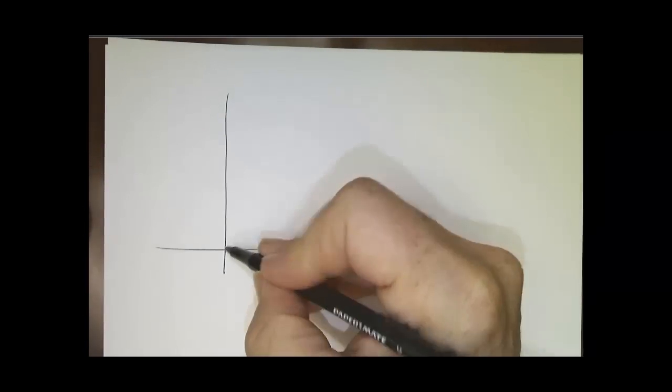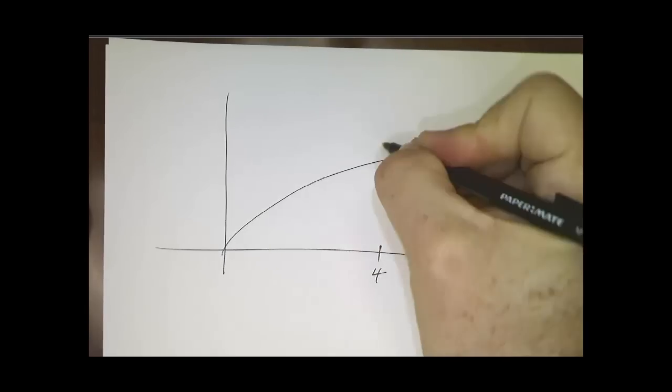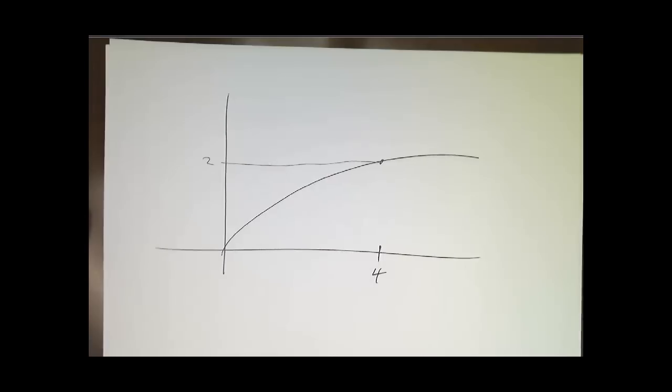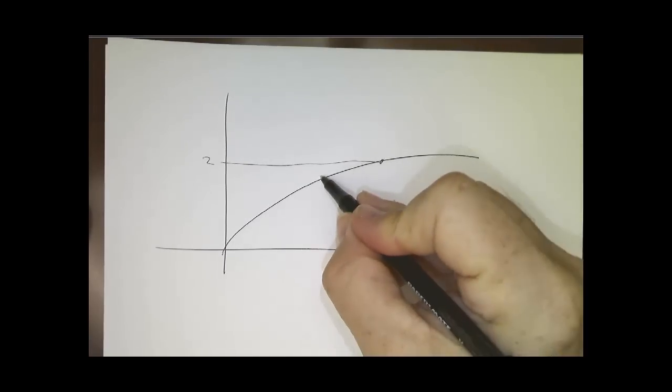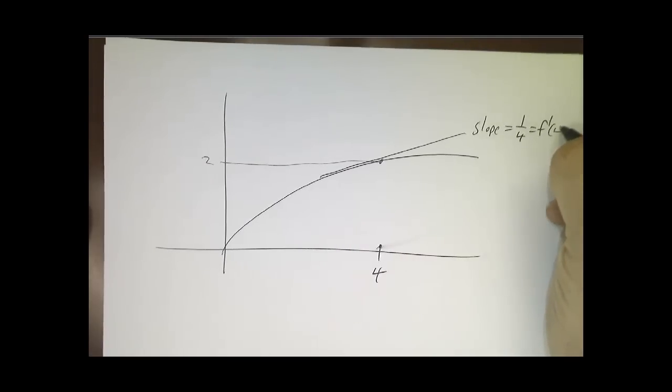So if we drew a picture of what was going on, we would say that here we have our square root function, and the square root of four is two. And at two, we're going with a slope of one-quarter, which is f prime of four.